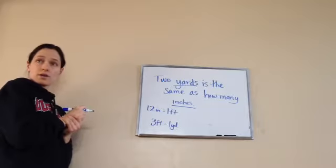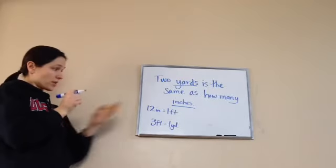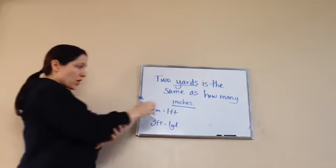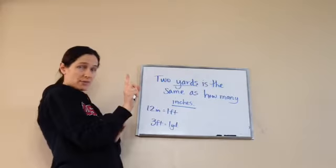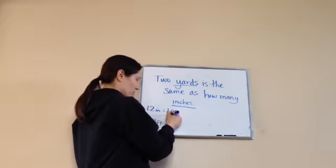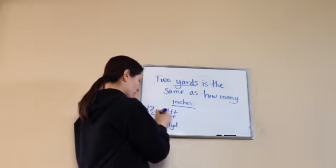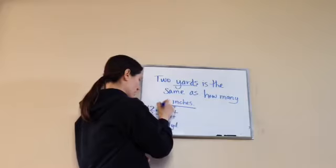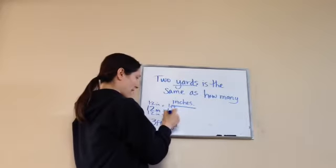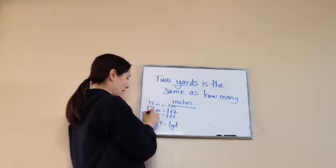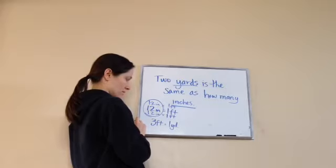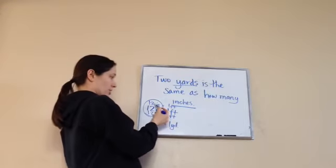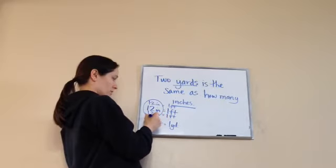Knowing these two measurements — one foot is 12 inches, and three feet equal one yard — would it be fair to add another foot, giving 12 more inches, then another foot, giving 12 more inches? So I have three feet total. How many inches? We add them: 12 plus 12 plus 12 equals 36 inches.